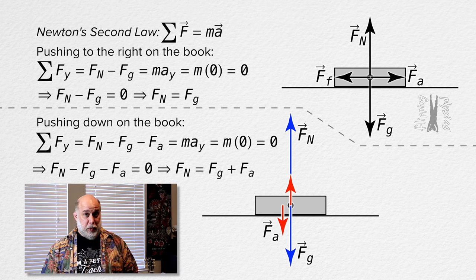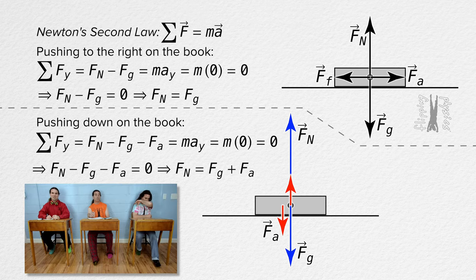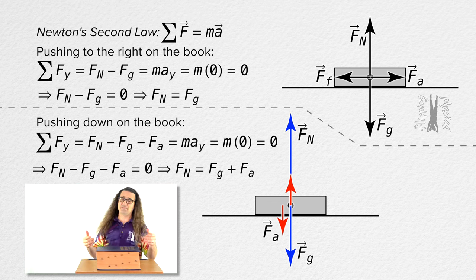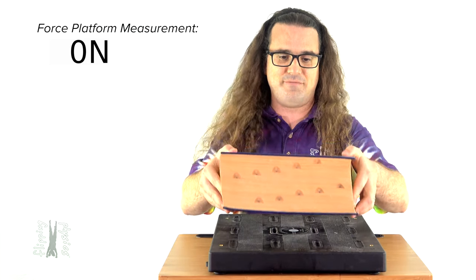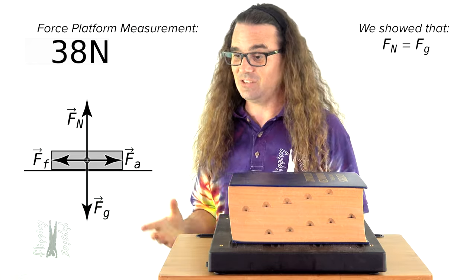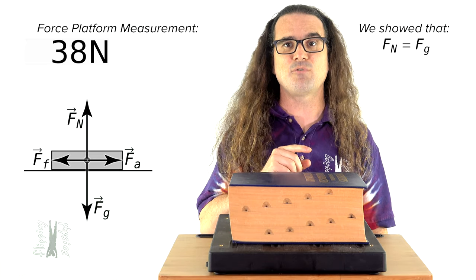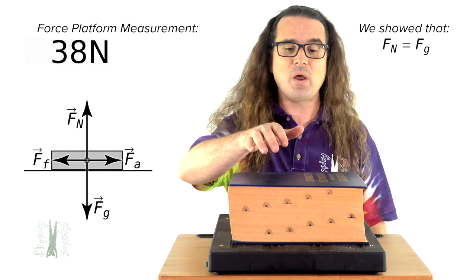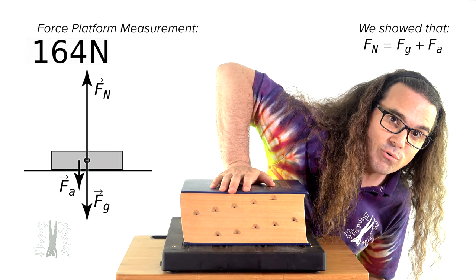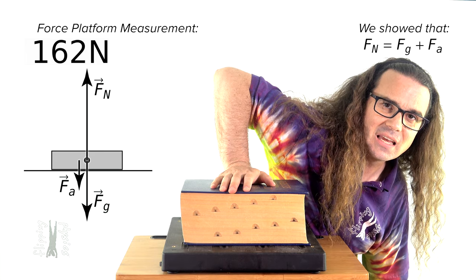Yeah, you could also put the book on a force platform to demonstrate that the magnitude normal force increases as you push down in the book. Bless you. Good point. Believe it or not, I actually have a force platform. So, I could take the force platform, I could place it right here. And when I put the book on the force platform, the reading on the force platform is 38 newtons. That means, before I push on it, the magnitude of the force normal measured by the force platform equals 38 newtons, which is the same value right now as the force of gravity acting on the book. And when I push down on the book, the value of the force normal increases as y'all proved it would.